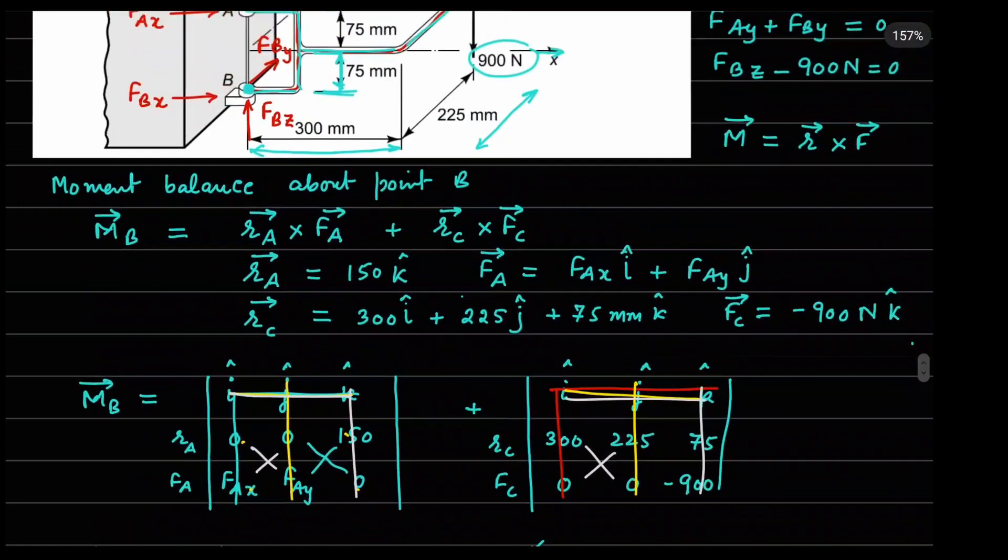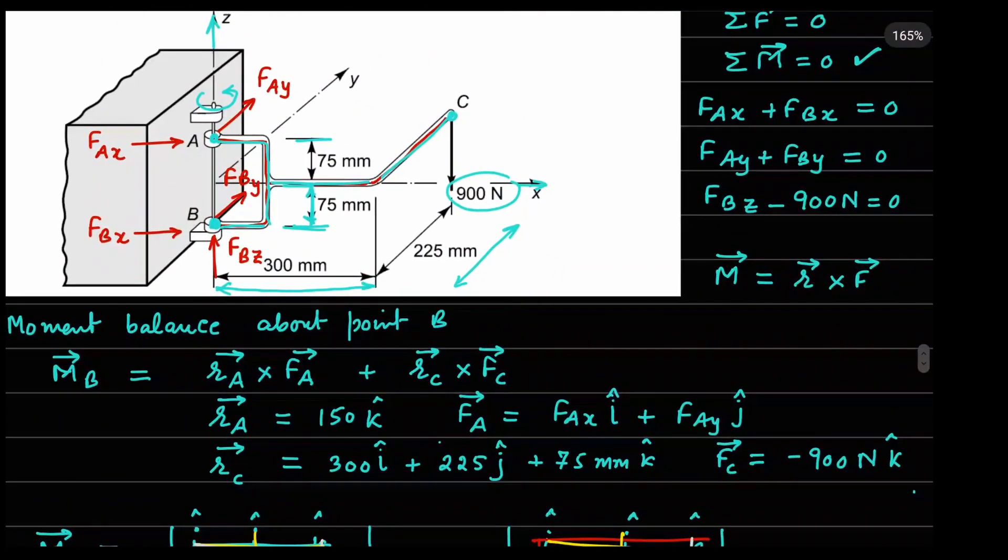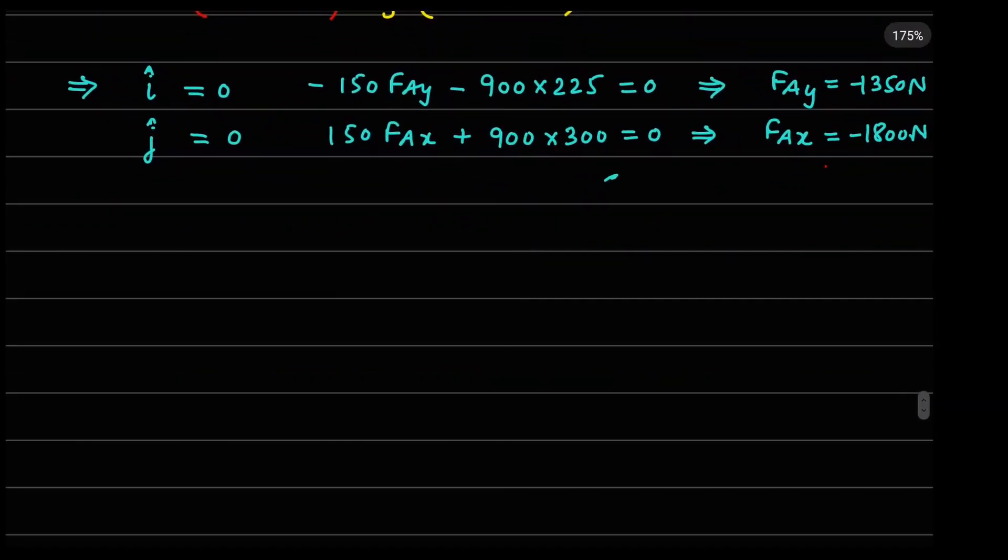Now, if you refer to the earlier equations, this is what we had here. So, we have got the value of FAX. So, FBX is nothing but negative of FAX. We got the value of FAY and FBY is nothing but negative of FAY. From this equation, we can clearly see FBZ is equal to 900 units. So, now, our final answer to this problem will be that at point A, we have FAX, FAY and point B, we have FBX, FBY and FBZ there. So, all of these values we have figured out.